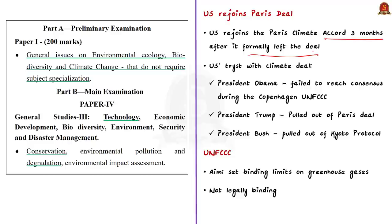Since 2009, UNFCCC — the UN Framework Convention on Climate Change — has been negotiating with member countries to finalize a climate deal to reduce harmful impact on the climate due to anthropogenic measures. The American administration headed by President Obama was very active in finalizing a global level climate deal, and Obama is said to have been one of the key factors in finalizing the Paris Agreement. But once Trump became President in 2016, the US path on climate mitigation measures completely went in the opposite direction.